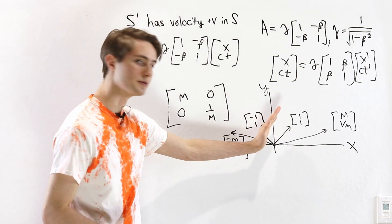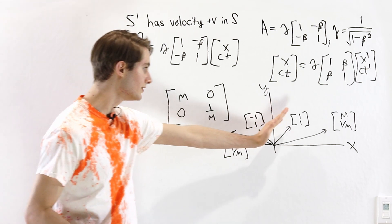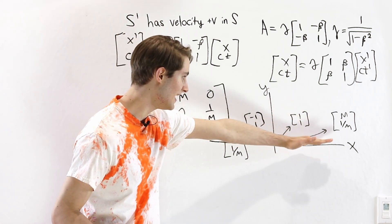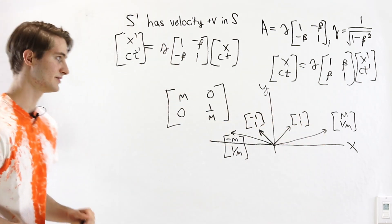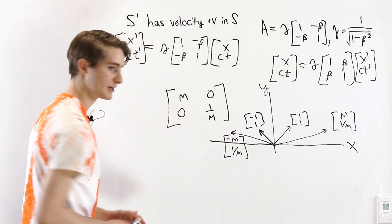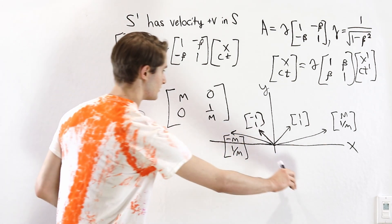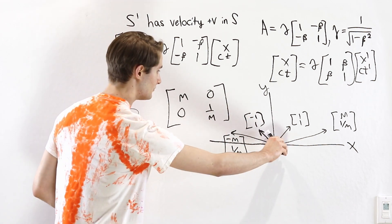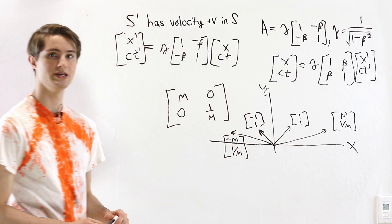So this first vector, we see what happens is it kind of gets stretched and its direction gets pulled down towards the x-axis. And the same thing happens to the vector over here. It starts out at a 45 degree angle, now it's getting pulled down towards the x-axis.